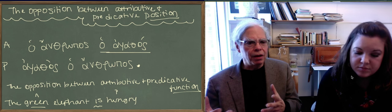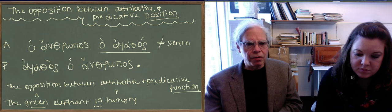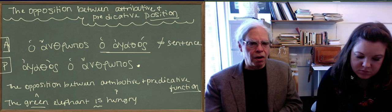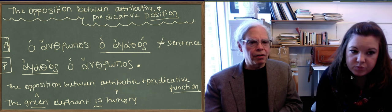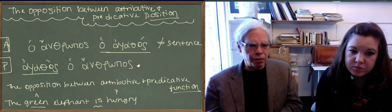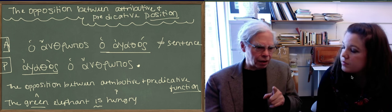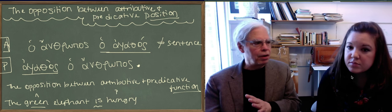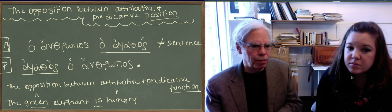But the second one, in which agathos, you notice, agathos, ha-anthropos, the agathos does not follow the article ha that agrees with anthropos. It comes before it. It could come after ha-anthropos and it would still be not in attributive position. Because once you've got the noun there, unless you repeat the article, attributive position is done.